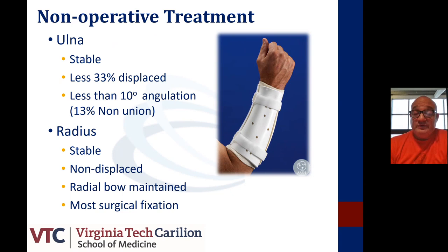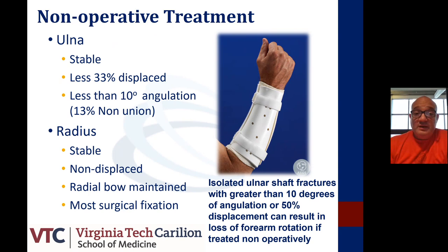For the radius to be treated non-operatively, it has to be stable, non-displaced, and the radial bow must be maintained — but most require surgical fixation. For isolated ulna shaft fractures with greater than 10 degrees of angulation or 50% displacement, these can result in significant loss of forearm rotation when treated non-operatively. Most forearm injuries do require surgical fixation, and most of these fractures are operative in adults.